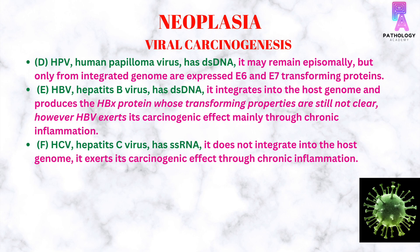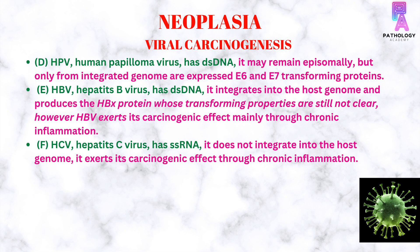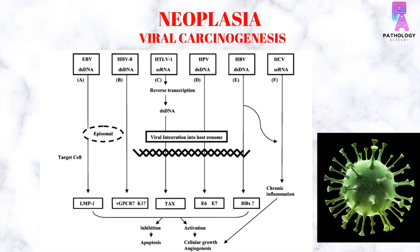Human papillomavirus has double-stranded DNA. It may remain episomally, but only from an integrated genome expresses E6 and E7 transforming proteins. Hepatitis B virus has double-stranded DNA and its carcinogenic effects are mainly through chronic inflammation. Hepatitis C virus has single-stranded RNA and its carcinogenic effect is also through chronic inflammation; it does not integrate into the host genome. As depicted in this image, EBV has the transforming LMP-1, HHV-8 has vGPCR and K-1, HTLV-1 has TAX, HPV has E6 and E7, and Hepatitis B and C viruses cause cancer mainly through chronic inflammation.